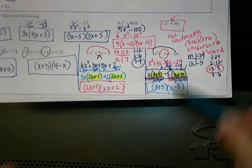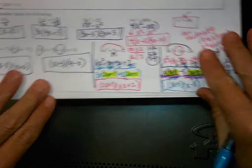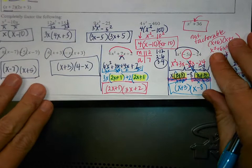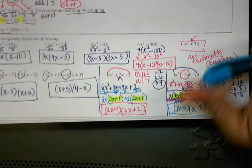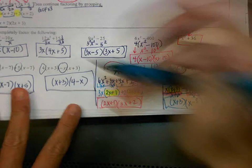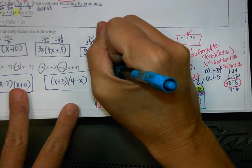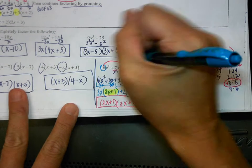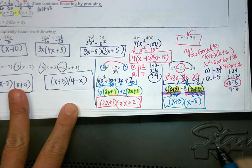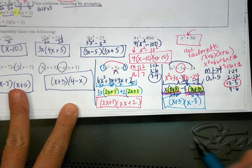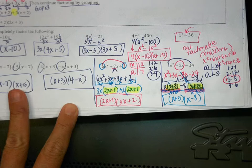In the previous one, how did you get 12 for the multiplication? You always take your coefficient of the first term and the last term and multiply them together — that's how I got 12.